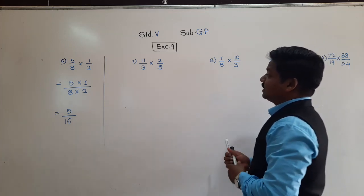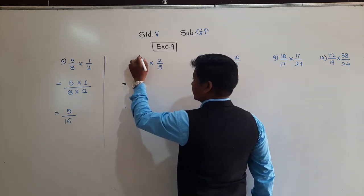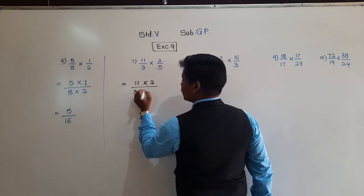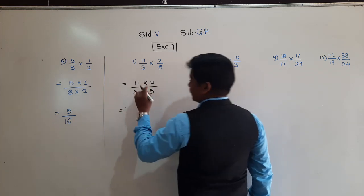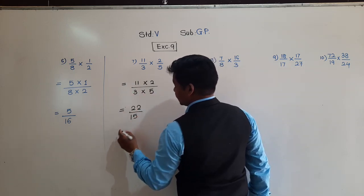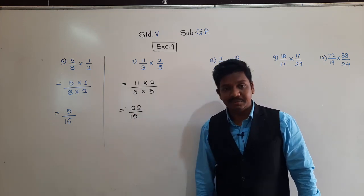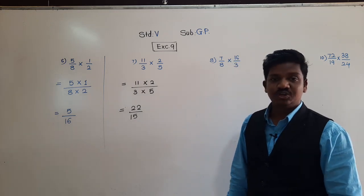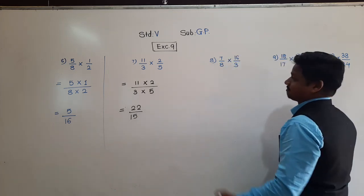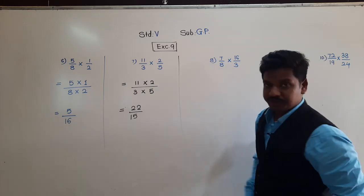Q7: 11/3 × 2/5. Multiply numerator with numerator: 11 × 2 = 22. Multiply denominator with denominator: 3 × 5 = 15. Are 22 and 15 divisible by any common number? No. So the answer is 22/15. Multiplication of fractions is quite easy at this level — the difficulty increases with later problems.